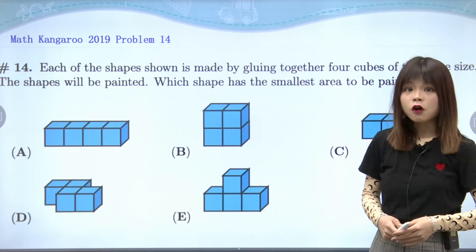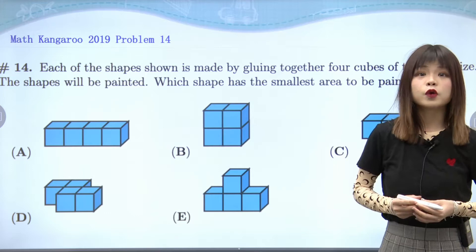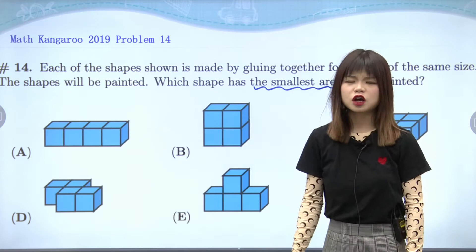Hello, everyone! Welcome to Think Academy's Maths Kangaroo class. My name is Ting Ting, and today we're going to look at a very fun math problem together. So let's first read the question. Each of the shapes shown is made by gluing together four cubes of the same size, and the shapes will be painted. The question is asking: which shape will have the smallest area to be painted?